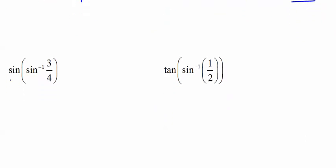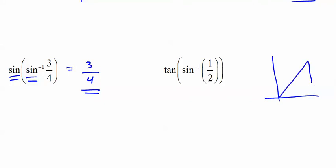Now: sine inverse of 3 over 4, and then we take sine of it — what happens? Correct, they cancel out. But this other one won't cancel. We go up in the first quadrant: sine equals opposite 1 over hypotenuse 2, which means the adjacent side is root 3 because root 3 squared plus 1 squared equals 2 squared. Put theta in the corner and tangent of theta equals opposite over adjacent: 1 over root 3, which is root 3 over 3.